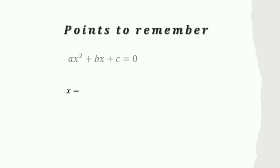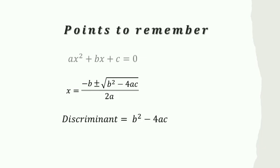The standard form of the quadratic equation is ax² + bx + c = 0. The quadratic formula is x = (−b ± √(b²−4ac)) / 2a. The discriminant, which we use to detect the nature of the quadratic equation, is b²−4ac. We can find the roots of the quadratic equation by factorization or by using the quadratic formula.